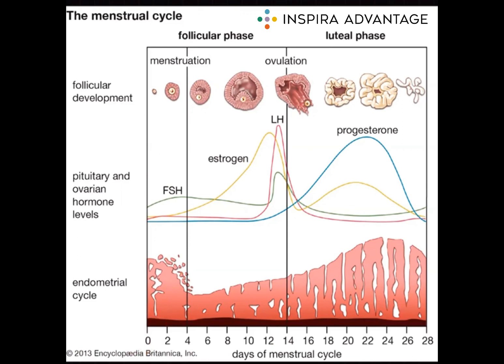Days 14 through 28 are known as the secretory phase, also known as the luteal phase. During the first half of this period, we see estrogen, LH, and FSH levels all drop while progesterone grows. You can think of progesterone as the hormone that is helping to prepare for the baby — progesterone prepares. The increase in progesterone is directly due to the previous LH spike, and its main purpose is to maintain and protect the endometrium for any potential fertilized egg. A good mnemonic to keep estrogen and progesterone straight: estrogen establishes and progesterone protects the endometrium.